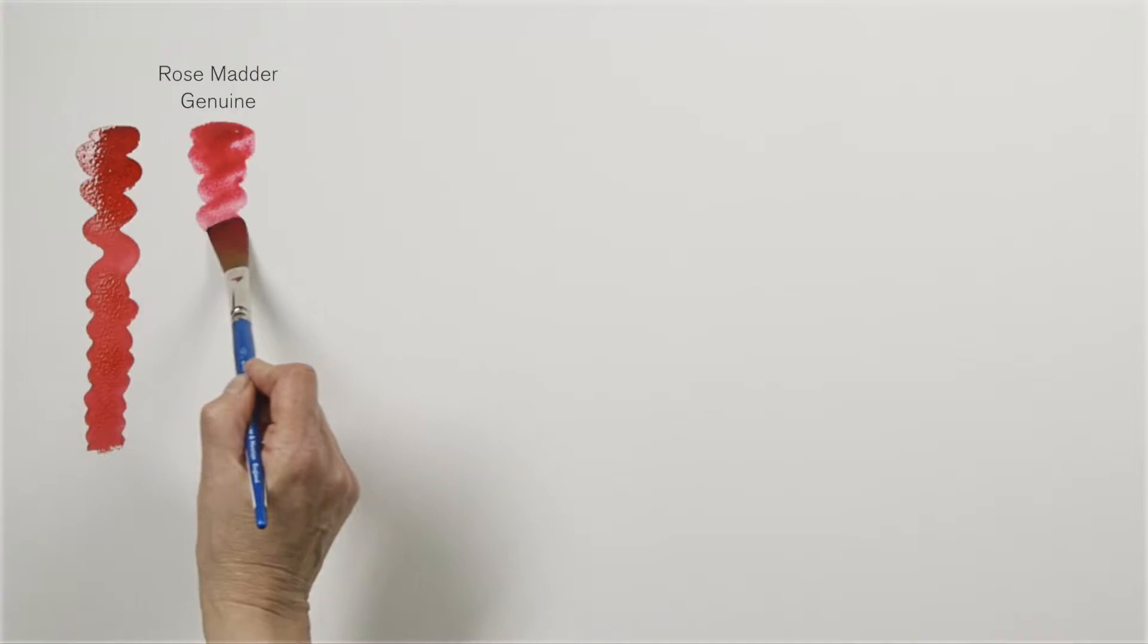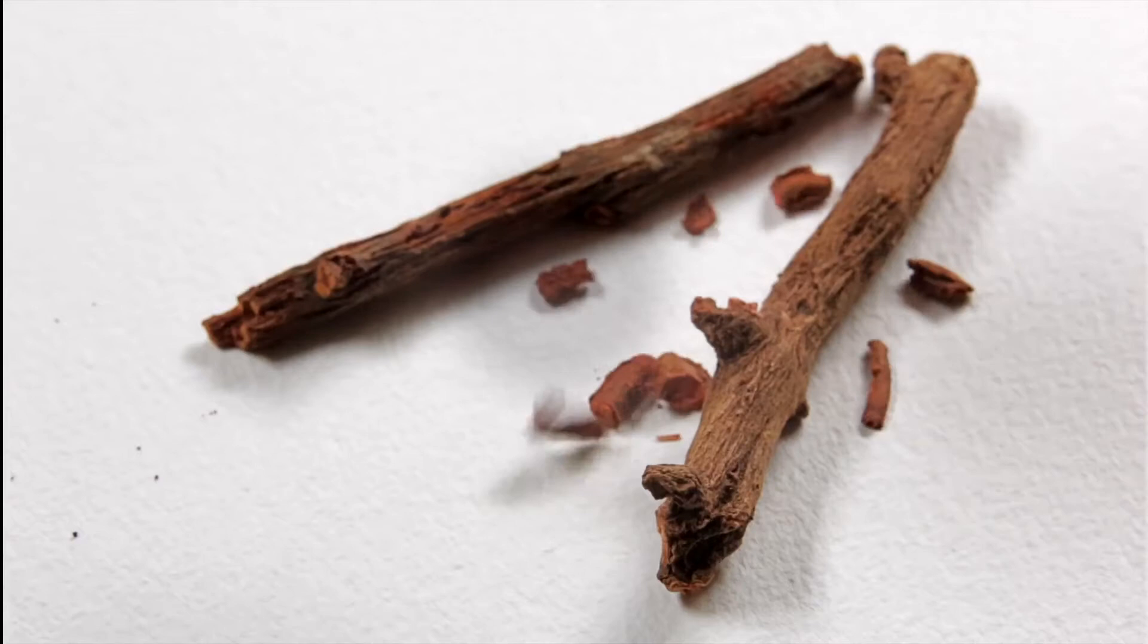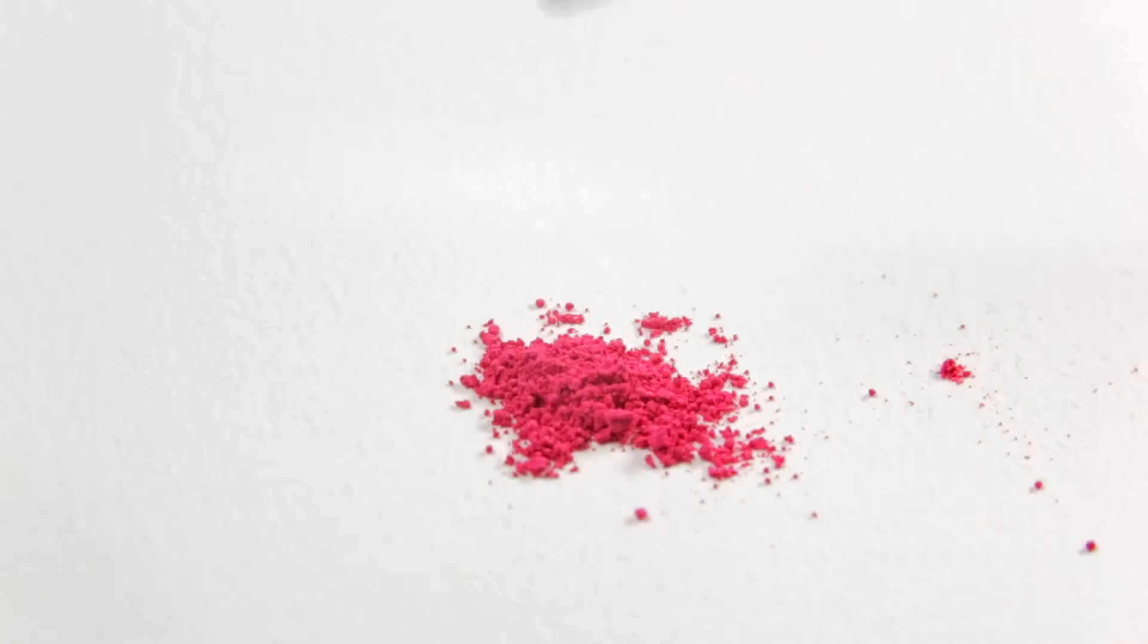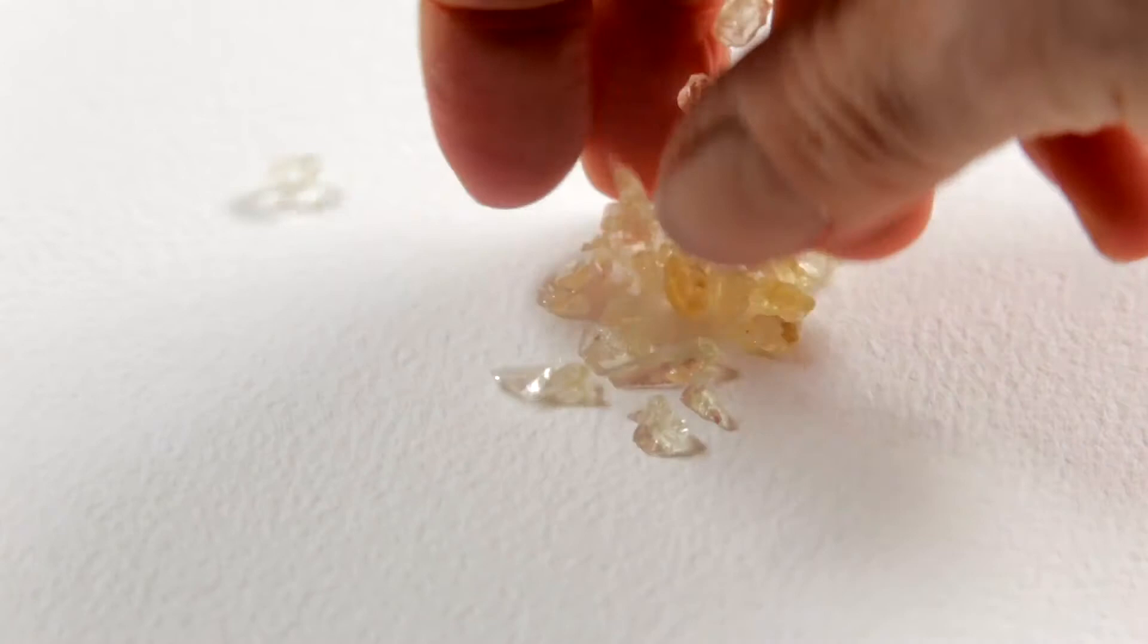This is rose madder genuine which is still made from the root which the colourman George Field discovered. By adding large quantities of water he extracted this amazing pink colour. It's extraordinary to think that this colour was created from this ordinary looking twig but you can see once dried and ground the pigment is this delicate pink. When wetted out with gum arabic you get this beautiful transparent pink.